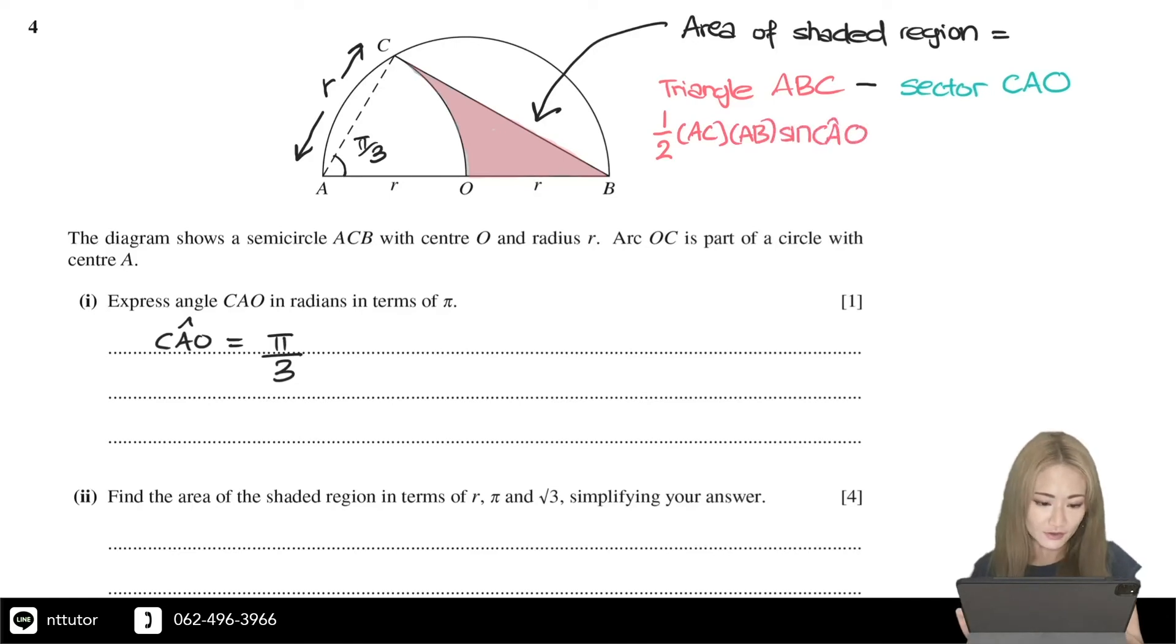To find the area of the sector, it would be the fraction of the circle. So the fraction corresponds to angle CAO over 2π multiplied by π R squared, where AO is the radius in this case. So the area of the sector CAO is equal to CAO over 2π multiplied by π multiplied by AO squared.